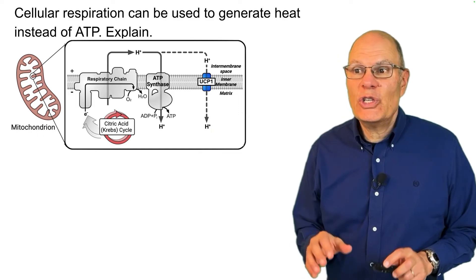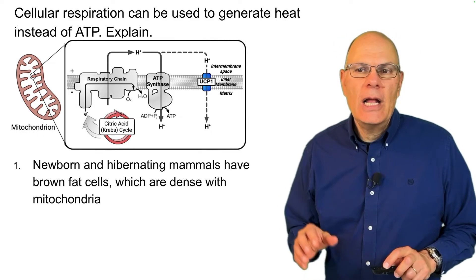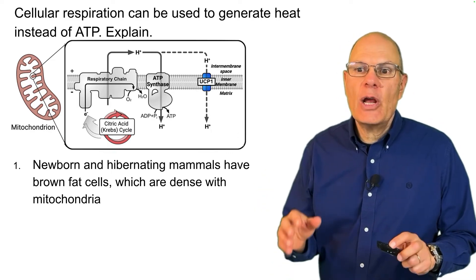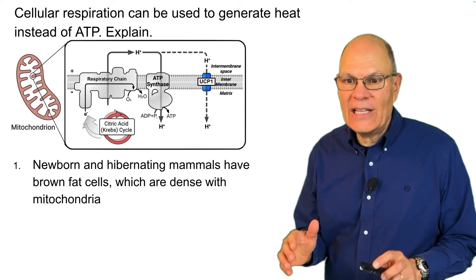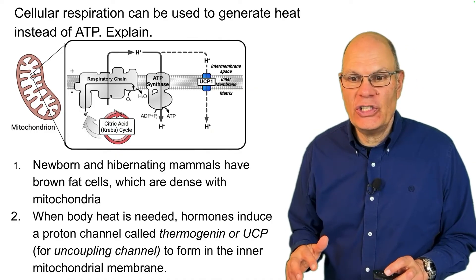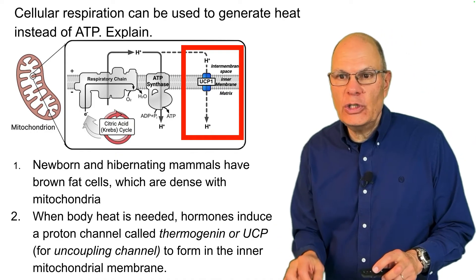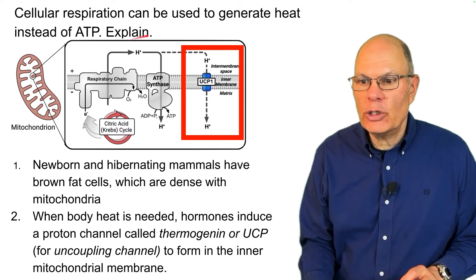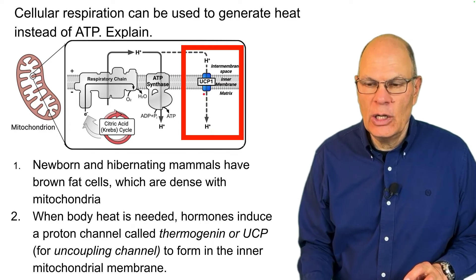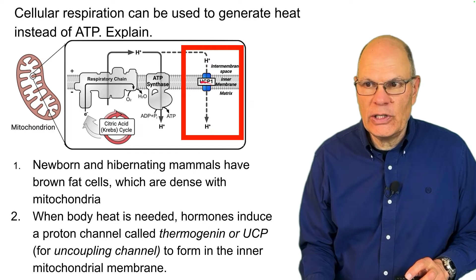Cellular respiration can be used to generate heat instead of ATP — here's how. In newborn humans and other mammals, including hibernating mammals, there are cells called brown fat cells. They are extremely dense with mitochondria, and that's where heat is generated. When body heat is needed, hormones induce a protein channel called thermogenin, or UCP — also called the uncoupling channel — to form in the inner mitochondrial membrane.